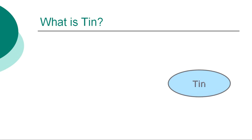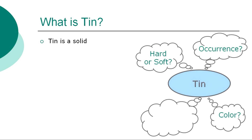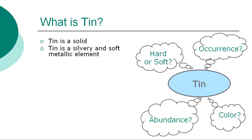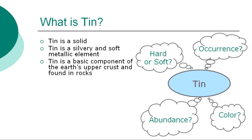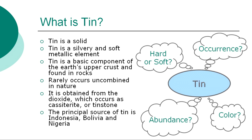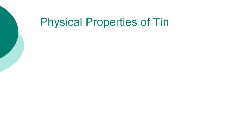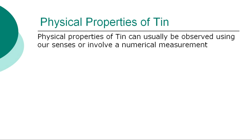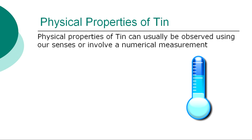What is tin? In a general overview of the element, we can at first describe tin as a solid. Tin is a silvery and soft metallic element. It is a basic component of the Earth's upper crust and found in rocks. Tin rarely occurs uncombined in nature and is obtained from the dioxide, which occurs as cassiterite or tinstone. The principal source of tin is Indonesia, Bolivia, and Nigeria.